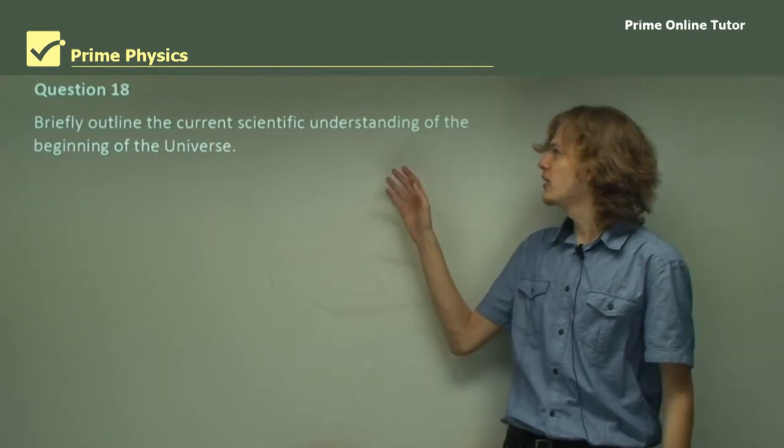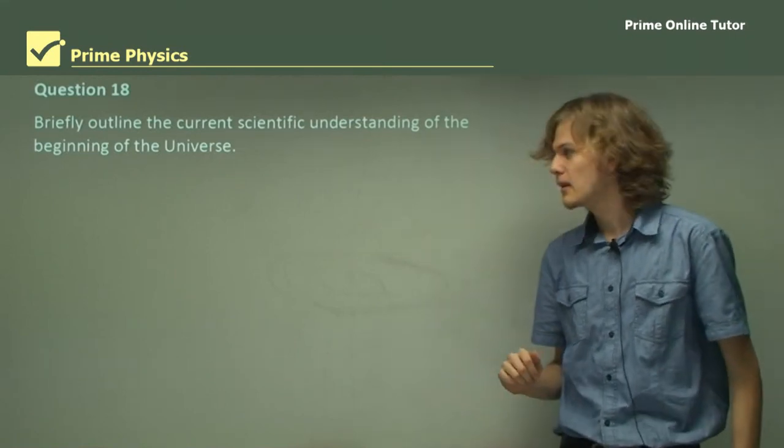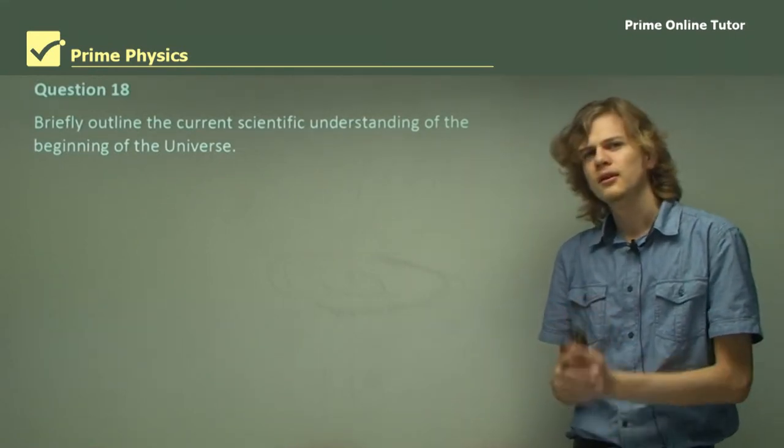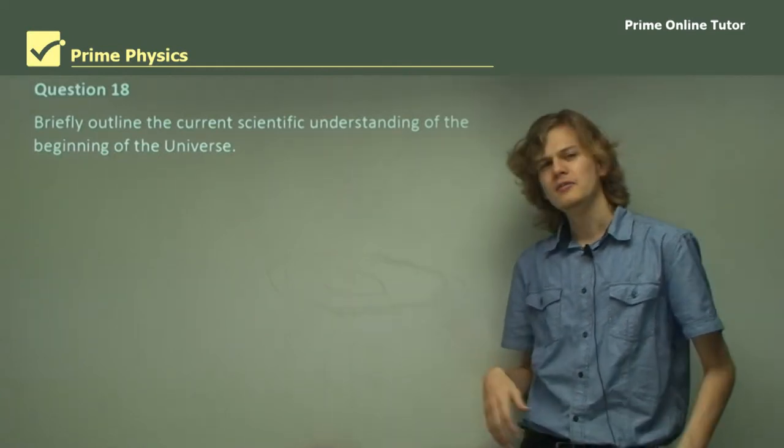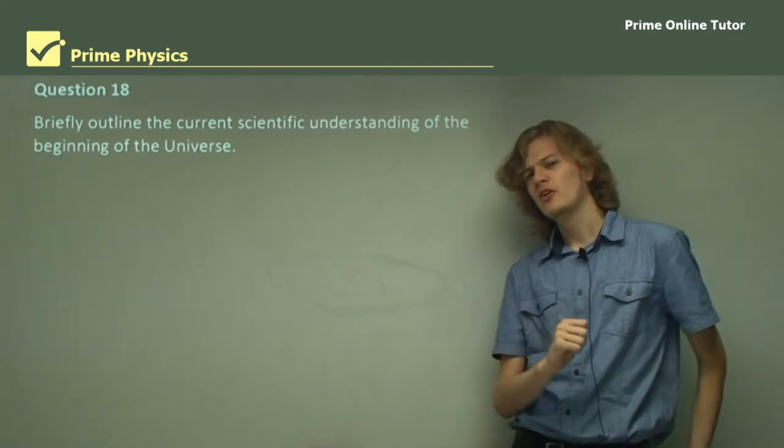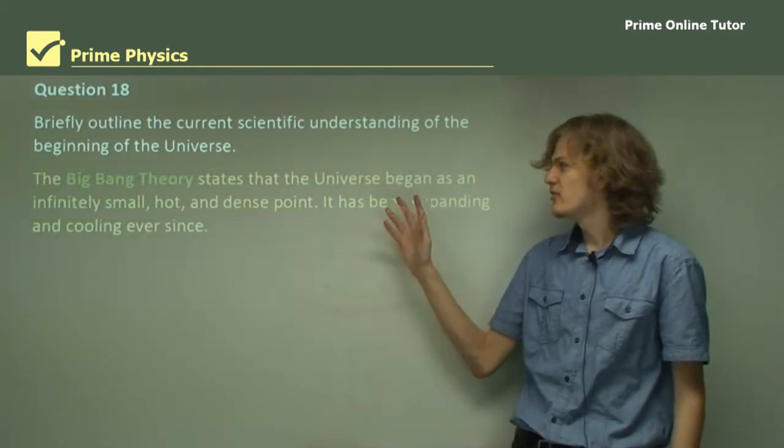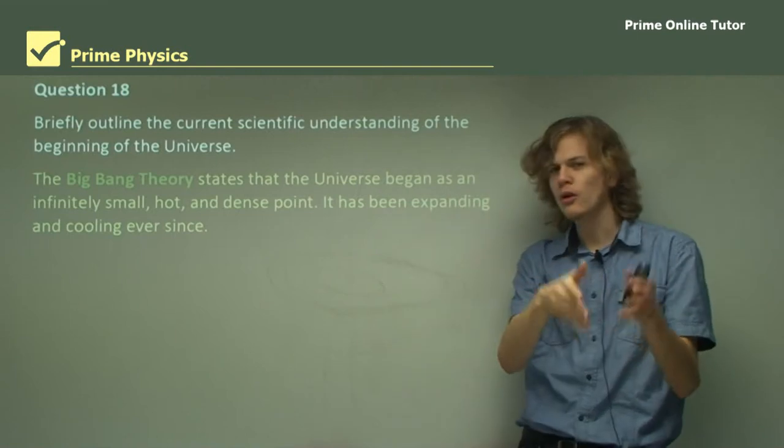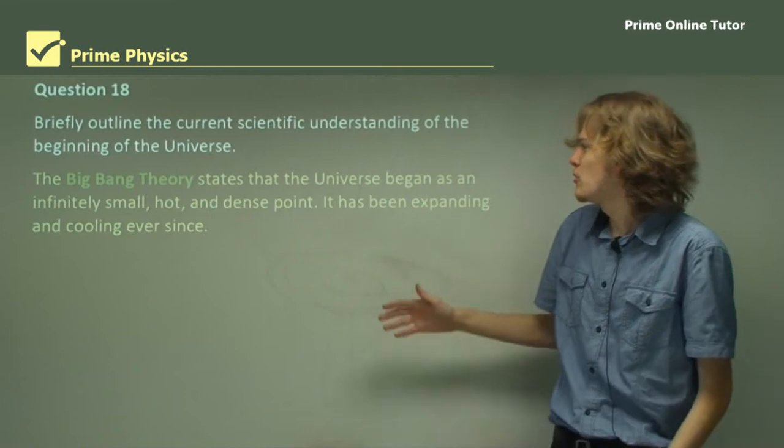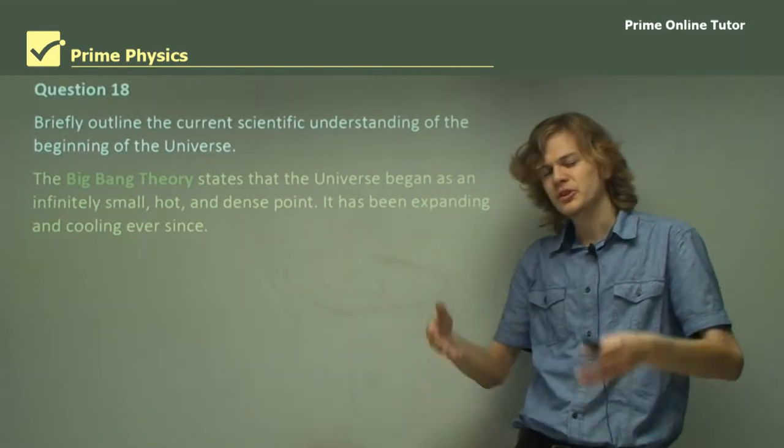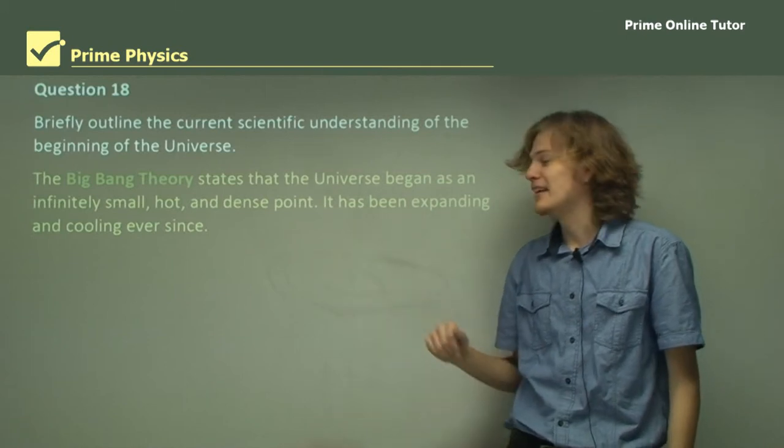Question 18. Briefly outline the current scientific understanding of the beginning of the universe. Now, let's see how well you were paying attention. I didn't mention the name of the theory, but you've probably already heard it before. It's the Big Bang Theory that states that the universe began as an infinitely small, hot, and dense point. Not a point in space, because there was no space to begin with, but a singularity.